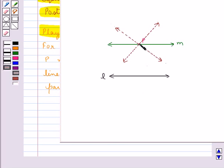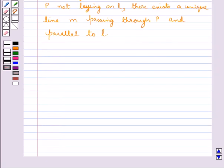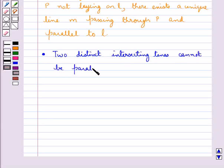And the other version of Euclid's fifth postulate can also be written as two distinct intersecting lines cannot be parallel to the same line.